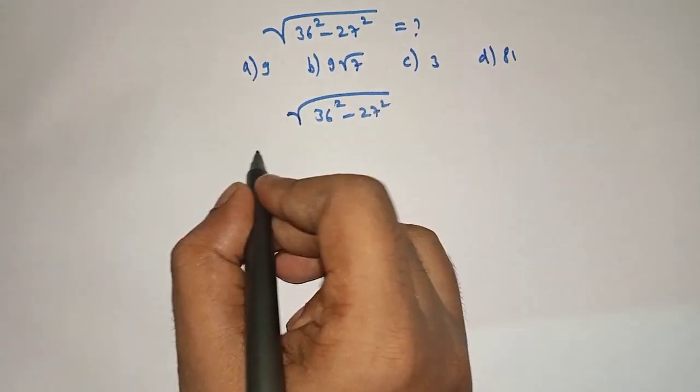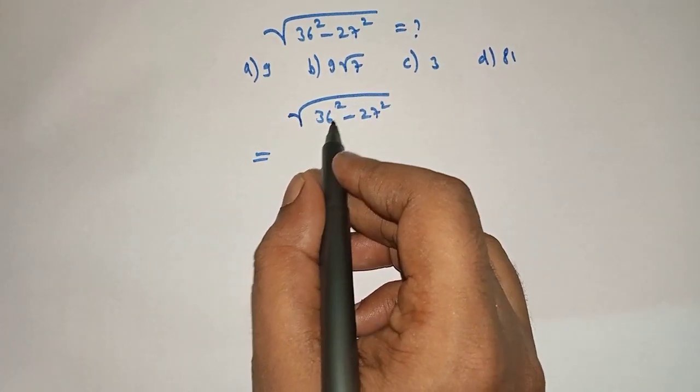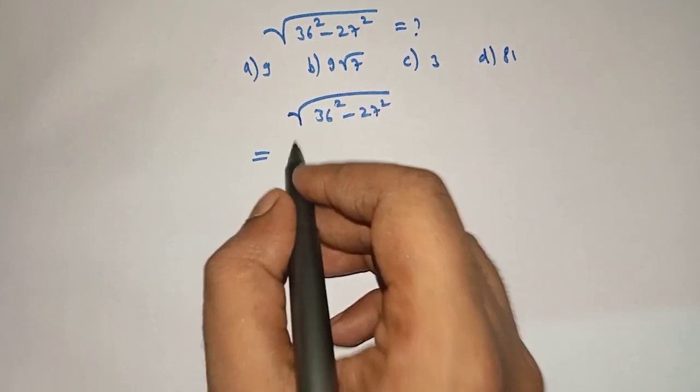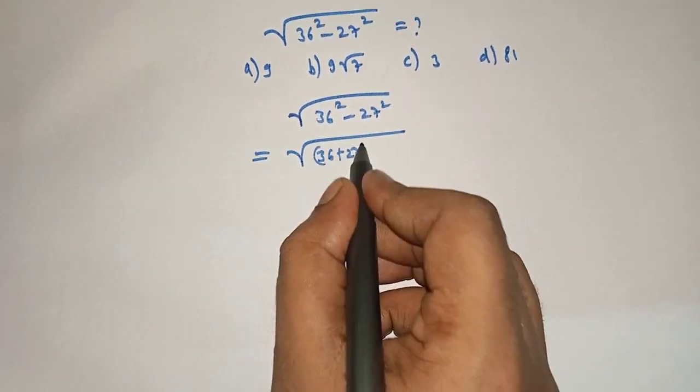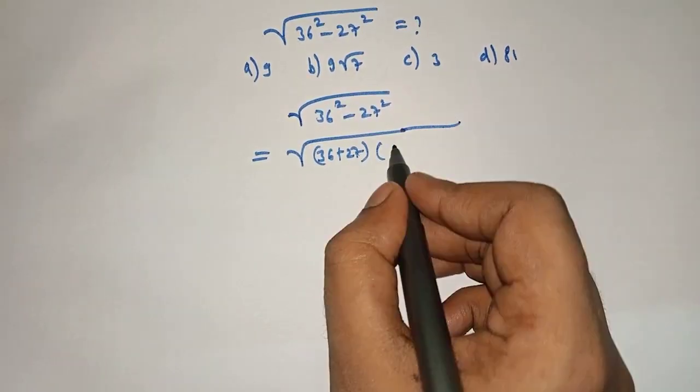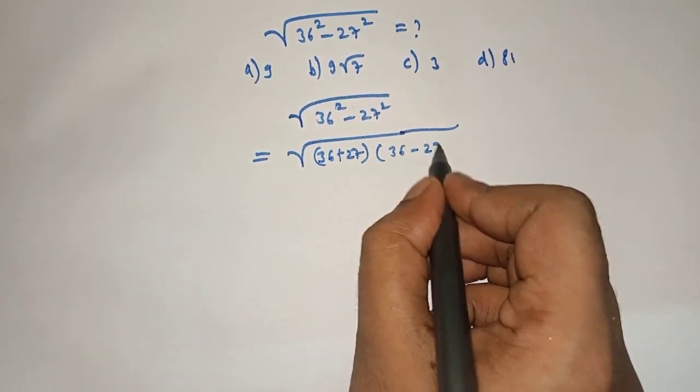Under root 36 square minus 27 square is equal to... Here 36 square minus 27 square can be written as 36 plus 27 into 36 minus 27.